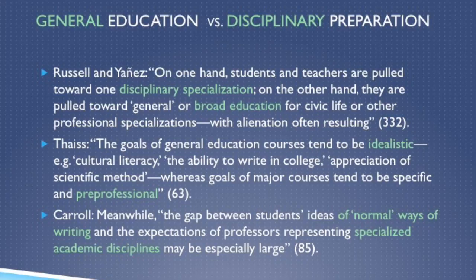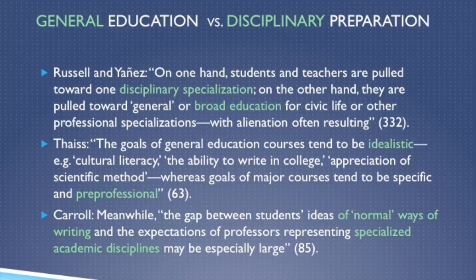Chris Tejas puts it a little differently and maybe a little more biased. He says the goals of general education courses tend to be idealistic — cultural literacy, the ability to write in college, appreciation of the scientific method — whereas goals of major courses tend to be specific and pre-professional. That word 'idealistic' points to his bias towards the professionalization side of the spectrum. And Leanne Carroll writes that within this tension, the gap between students' ideas of normal ways of writing and the expectations of professors representing specialized academic disciplines may be especially large.